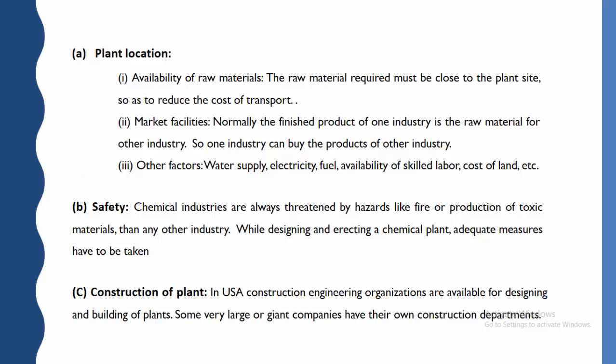Other facilities include availability of water supply, electricity, skilled labour, and cost of land. These things have to be considered for plant location. Second parameter is safety. Chemical industries are always threatened by hazards like fire, toxic materials, and other risks more than other industries. So whenever you want to establish a plant, you have to think about safety from the beginning. While designing a chemical plant, adequate safety measures have to be taken.